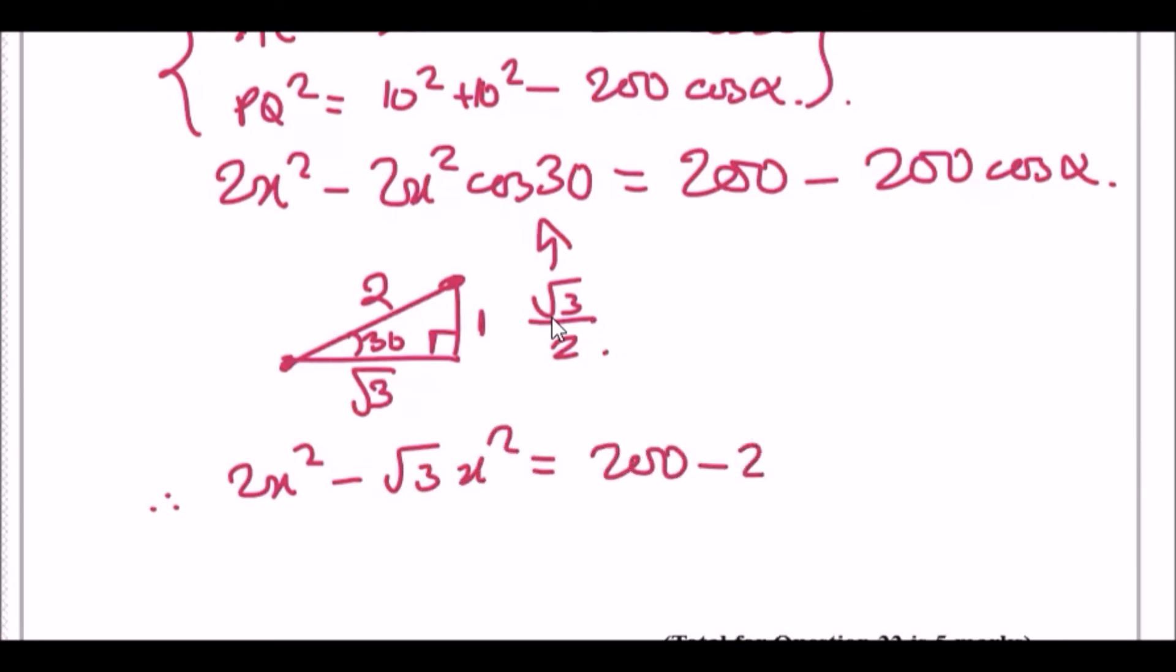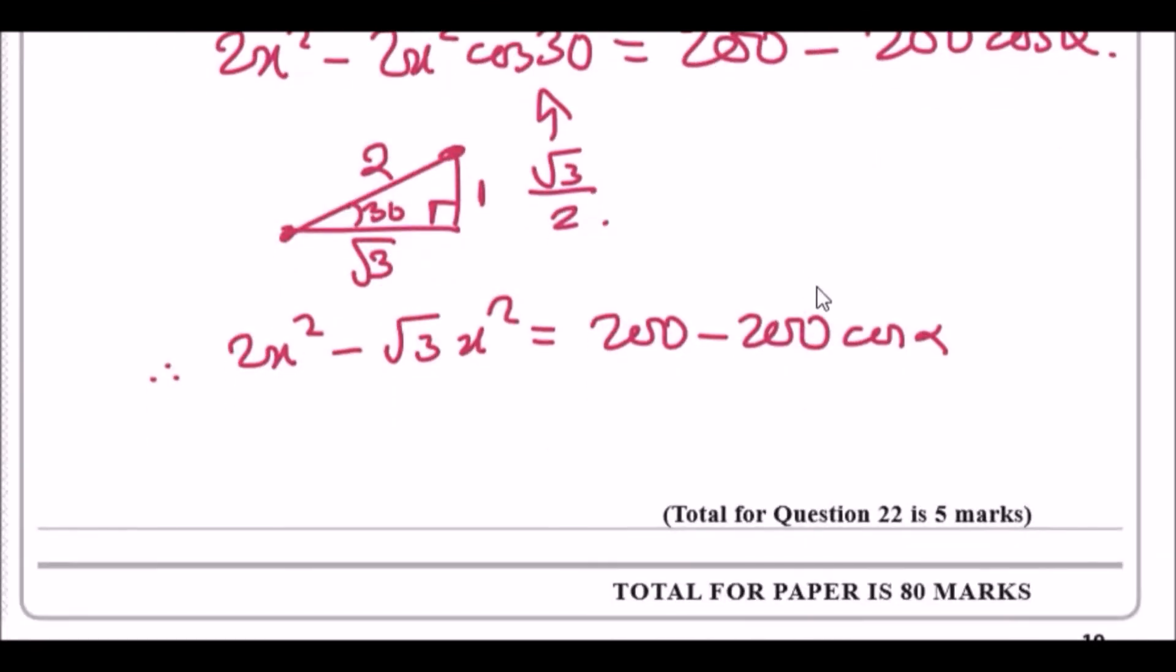All right, almost done guys, almost done. Now to make your life easy, let's divide 200, let's divide 200 across and factorize x² here. So you're gonna have (2 minus √3) over 200 x².